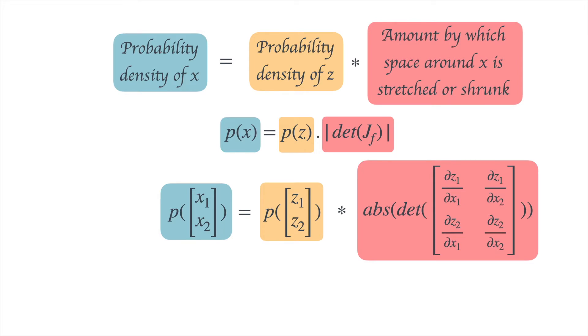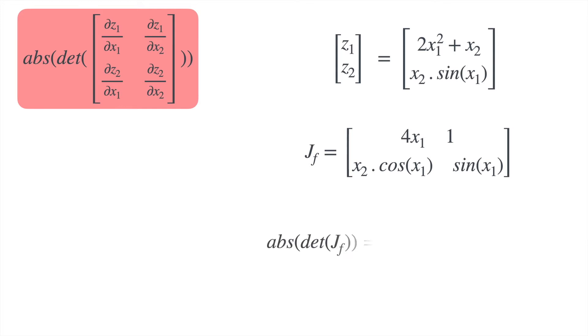Let's take a look at one example of what a Jacobian looks like. If we have a vector z as a function of a vector x, then the Jacobian matrix for this function looks like the one shown on the right side of the screen, and its determinant will be equal to 4x1 sin(x1) minus x2 times cos(x1).